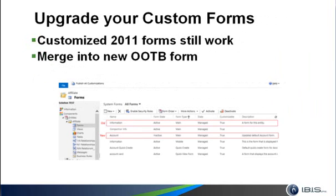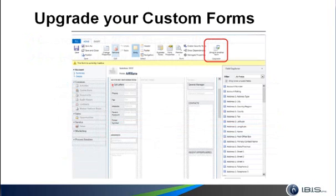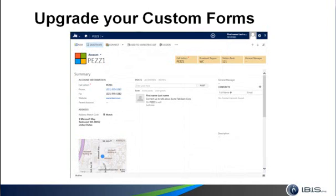The second task after an upgrade is to update your custom forms. In 2011 you probably had a lot of custom forms, but in 2013 the look and feel has changed a lot. They go ahead and give you an inactive out-of-the-box form for every entity. For example, in the screenshot here you have an updated default form and then your information form, which is your custom form from your previous installation. If you want to leverage CRM's new and improved interface, open the inactive form and bring in the 2011 information form — it will spiff it right up and you can take advantage of everything the new interface has to offer.